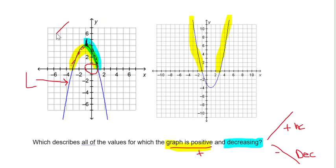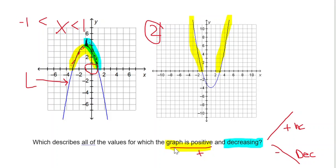I could write that as the interval x which is less than 1 but greater than negative 1. Now if we look at our second example on the right and we look for positive — we've already highlighted positive, that would be above the x-axis — which side is decreasing? Only one side is decreasing.